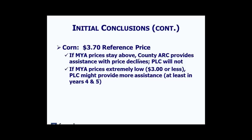If market year average prices are extremely low — probably $3 or less — PLC might provide more assistance, and that's especially true in years four and five due to the rolling five-year Olympic average in County ARC picking up the high prices of recent years. As those years roll out and if prices stay low, the benchmark will decline. For soybeans, the reference price is $8.40 a bushel — well below all current five-year forecasts — meaning County ARC will provide assistance for price declines, but PLC will not so long as prices stay above $8.40.